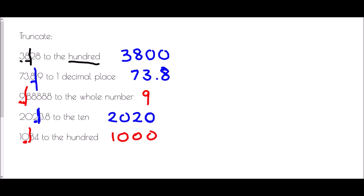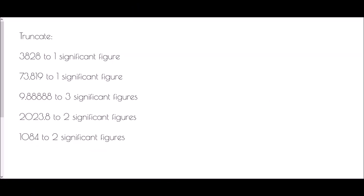The very important factor — especially in questions such as this — is that if I asked you to round to the nearest whole number, 9.88888 would have rounded up. And in the last one, if I was rounding to the nearest hundred, 1084 would have rounded up. When it comes to truncating, we never go up — it will always cut off, and therefore we will always end up with a smaller value than the one we began with.